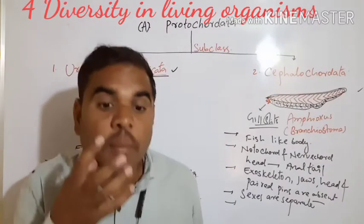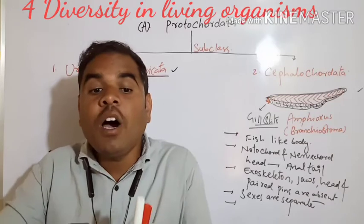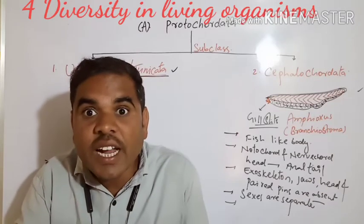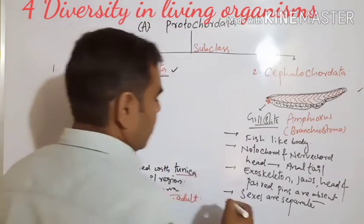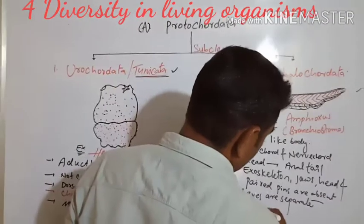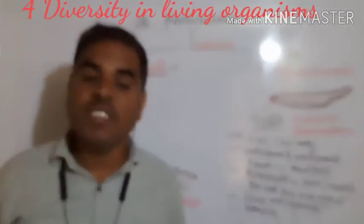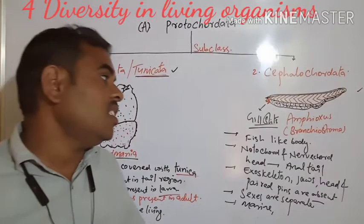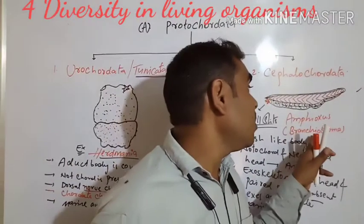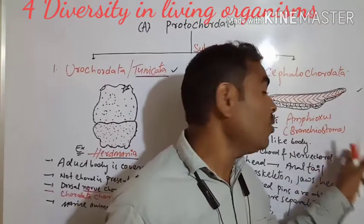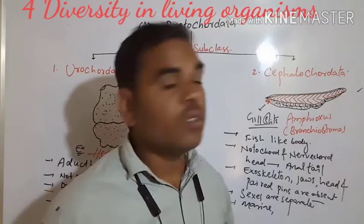Mostly these animals are marine and they are burrowing — living inside the sand in shallow seawater. The best examples of Cephalochordata are Amphioxus and Branchiostoma.